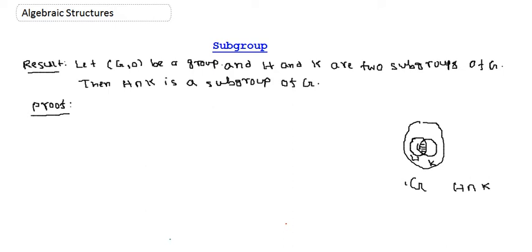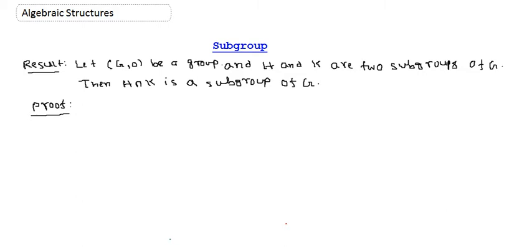If H and K are two subgroups of G, then H intersection K will be a subgroup of G. We have the proof for this result, so we will now prove it.